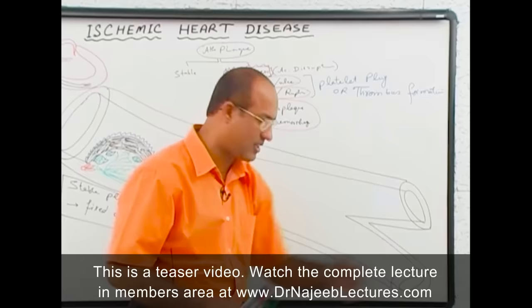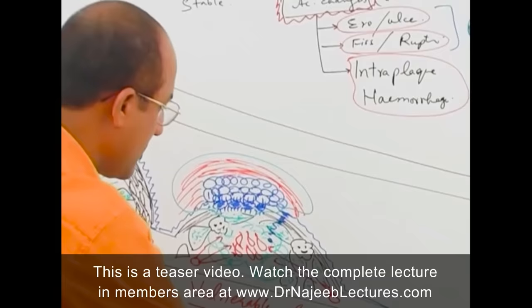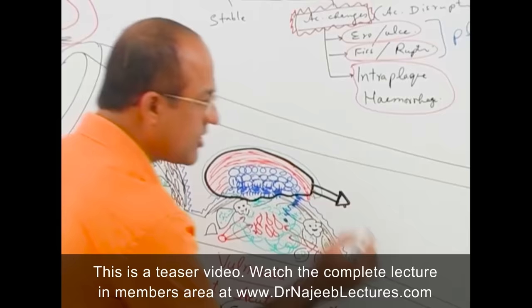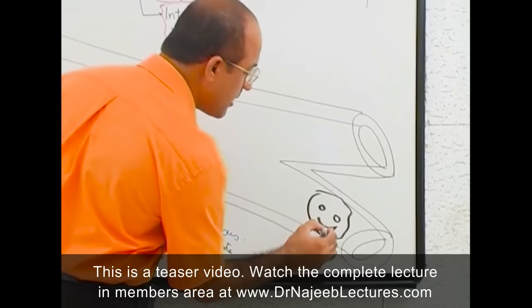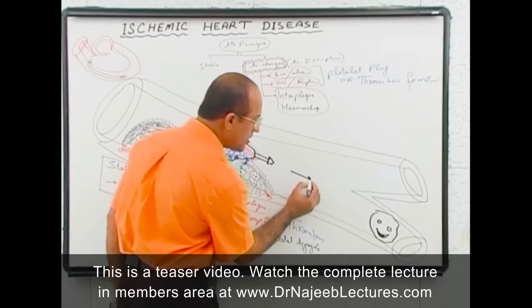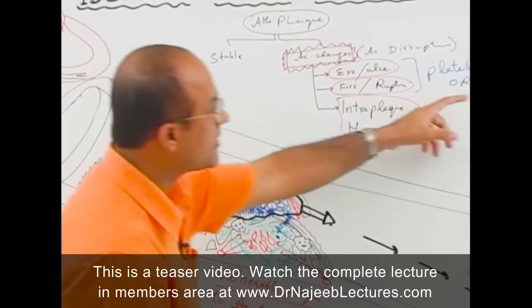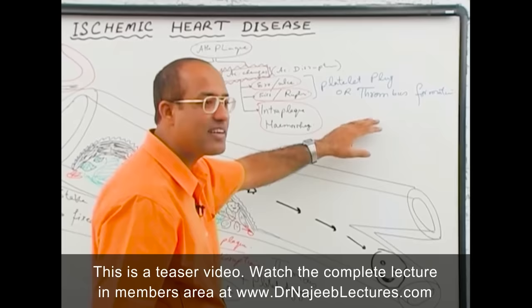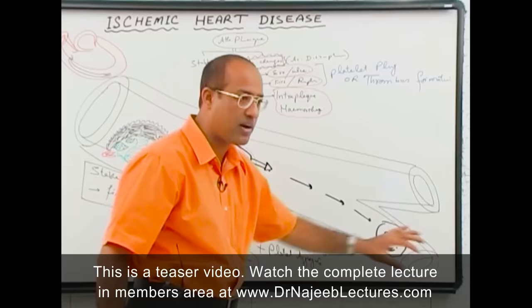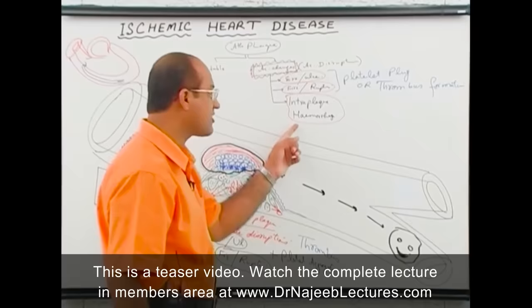Or the thrombus may detach and lead to embolization — the thrombus made here can travel to a smaller vessel and block it distally, producing severe problems. So dynamic changes mean platelet plug may form and dynamically obstruct, or thrombus may form and obstruct, or detach and embolize, causing thromboembolism blocking a distal part of the artery. Intra-plaque hemorrhage is also dynamic — a plaque with hemorrhage inside is dynamically ballooning up.